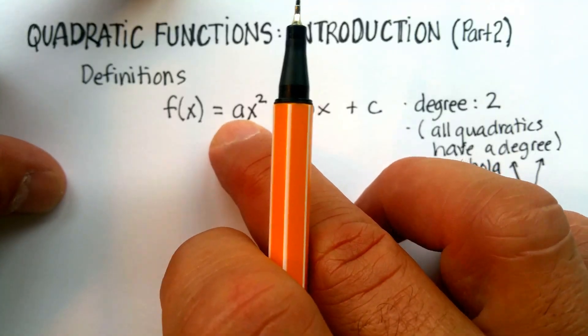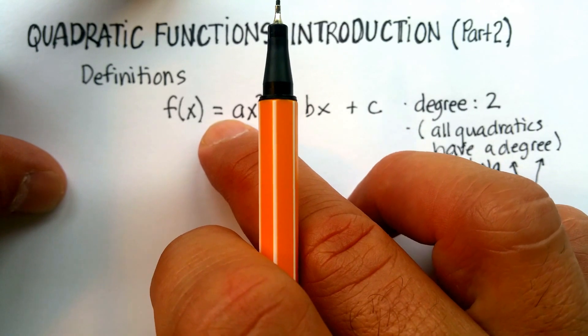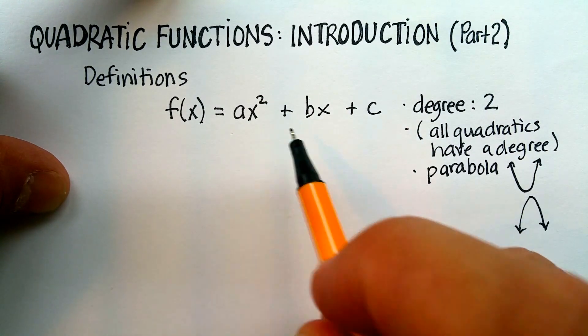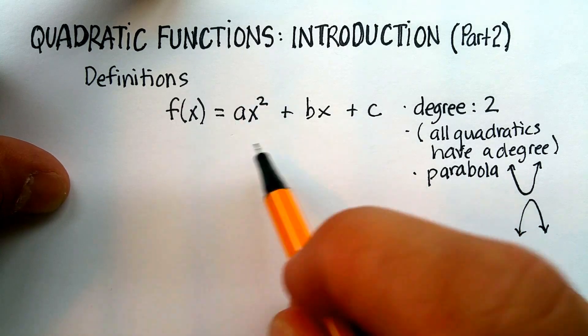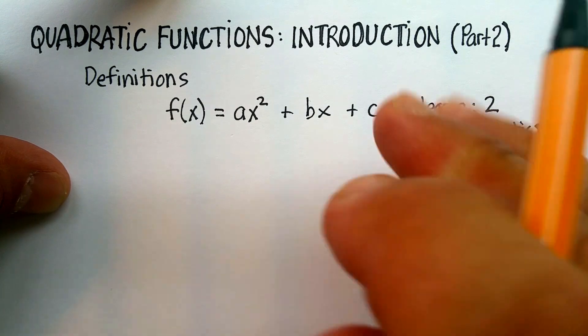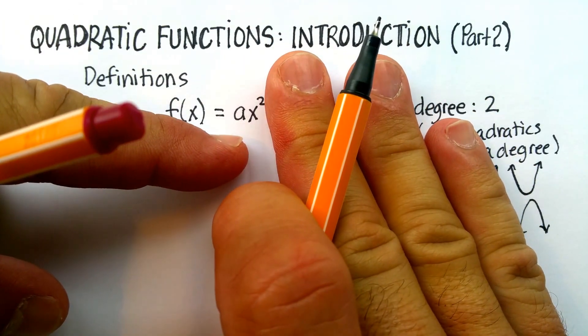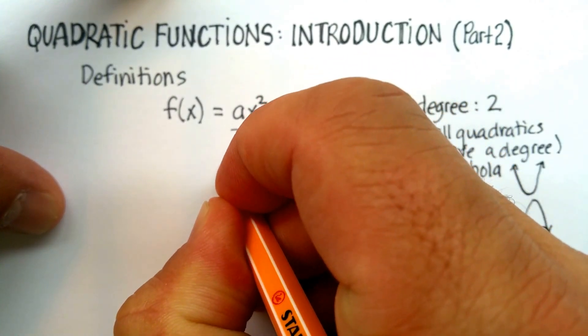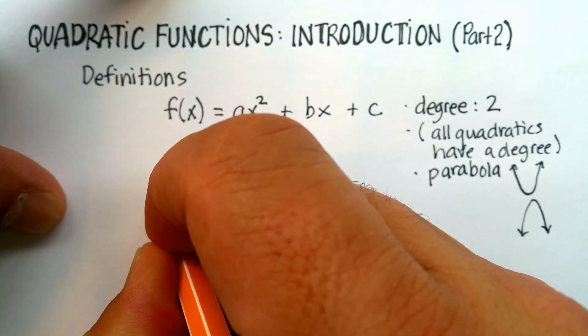This term—remember, terms are a collection of numbers and variables separated by additions and subtractions. So, this particular equation has one, two, three terms. This term actually has a name, and this term is called, strangely enough, the quadratic term.